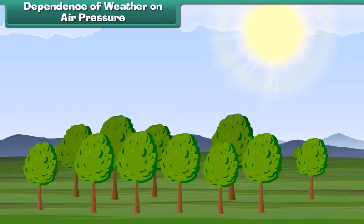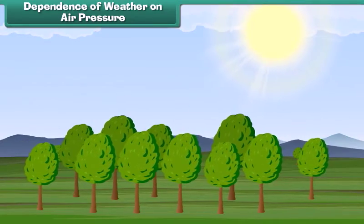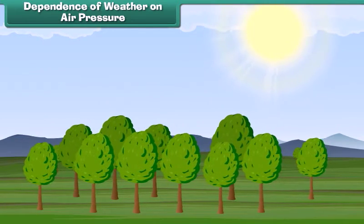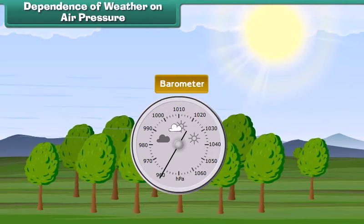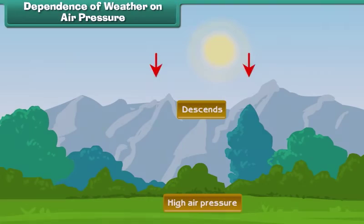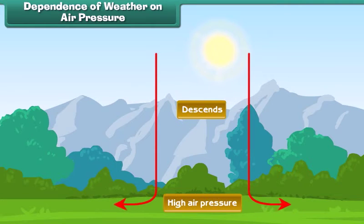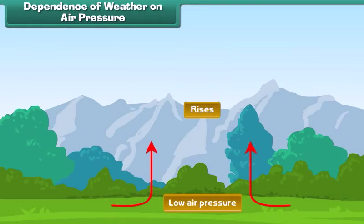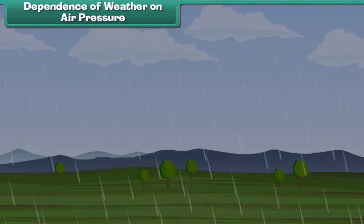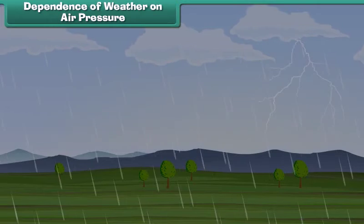Air pressure — you might not realize it, but the air around you actually has a weight. We measure air pressure with a device called the barometer. In areas of high pressure, the air slowly descends to the earth's surface, and high pressure areas are associated with clear sunny days. In areas of low pressure, air rises up into the atmosphere. Low pressure areas have high humidity, clouds, rain and other kinds of precipitation.